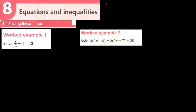Starting with the basics: here the value written as X is an unknown value, also called a variable. It is unknown and we need to make it known — we need to find its value. To do that, we are going to use the inverse BEDMAS rule.